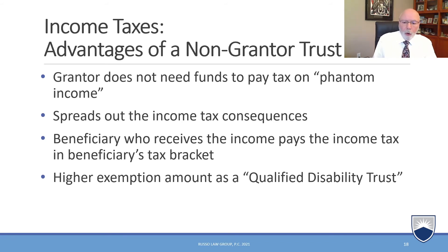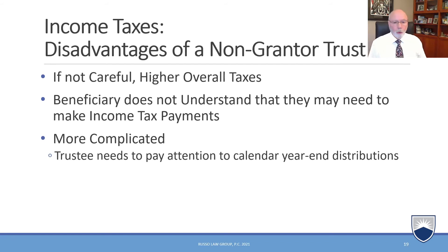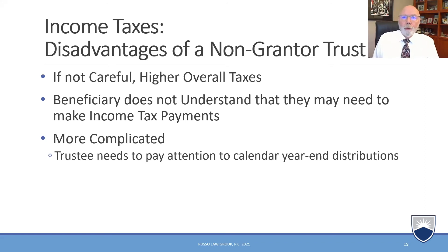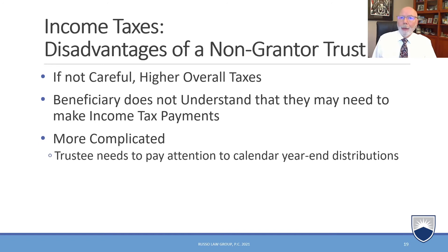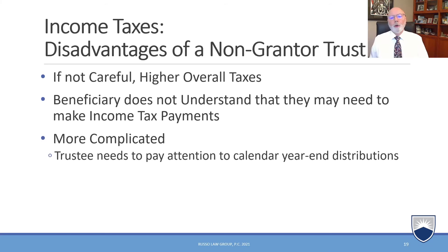The disadvantage of a non-grantor trust is that if you're not careful, you can have higher overall taxes. Let's say a trust had $50,000 of income, it's a non-grantor third-party SNT, and in a given year only $5,000 was spent on the beneficiary. Now $45,000 is going to be taxable at the trust rates, resulting in a higher overall rate. So we have to be careful. It's always good practice for the team to get together at year-end to analyze what trust income there is and how much was spent for the benefit of the child with special needs, so there is room to work things out to minimize taxes.